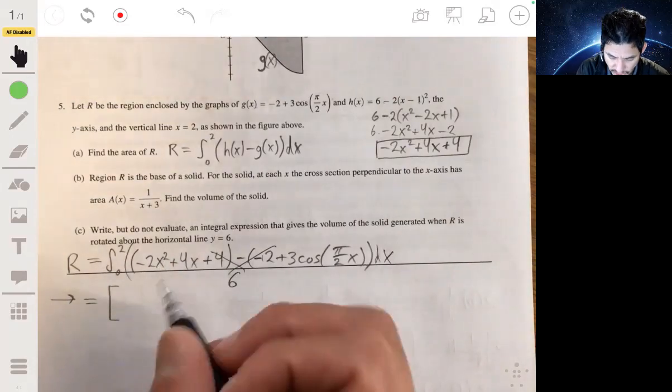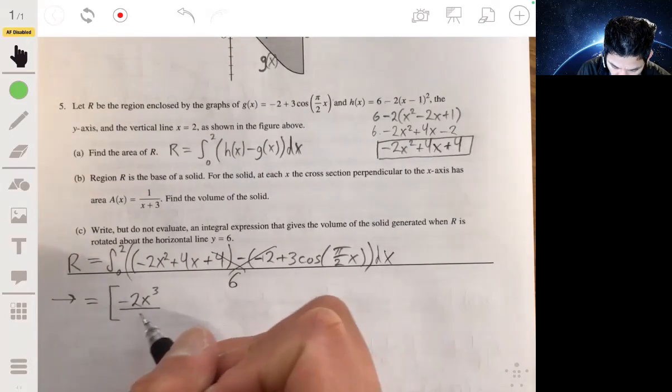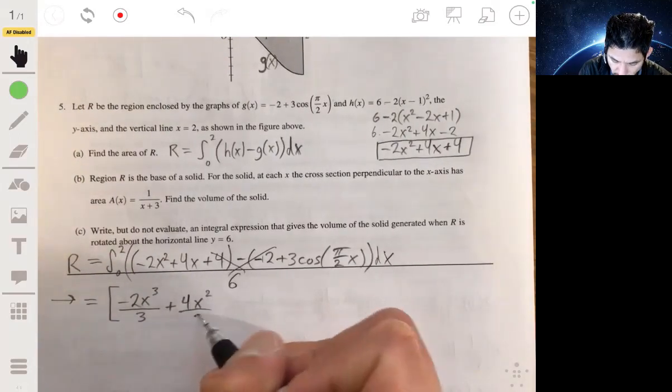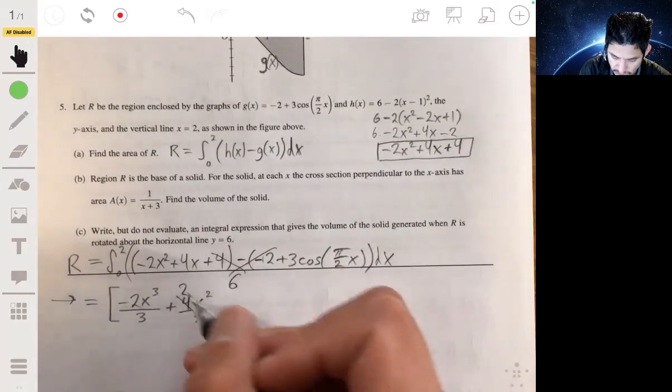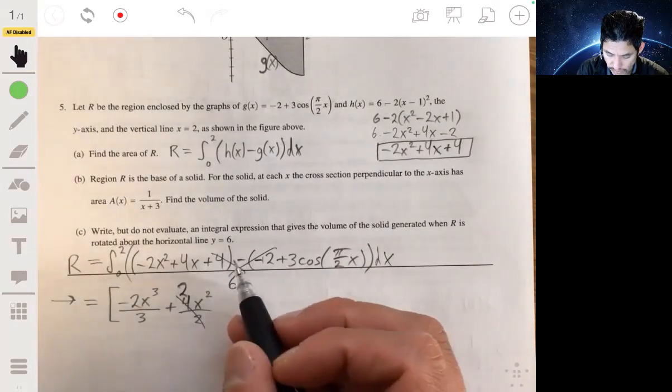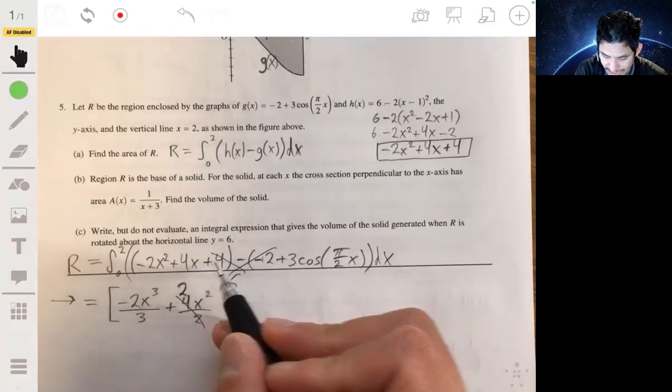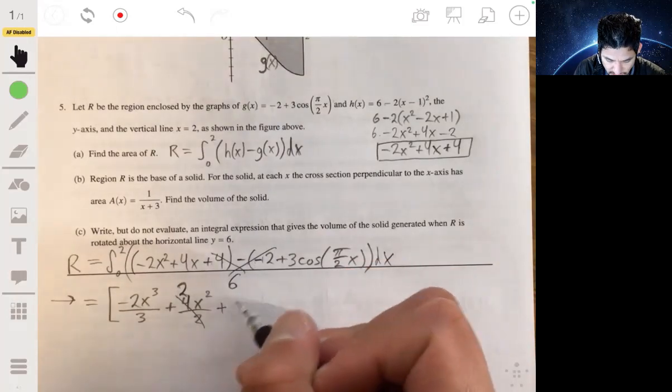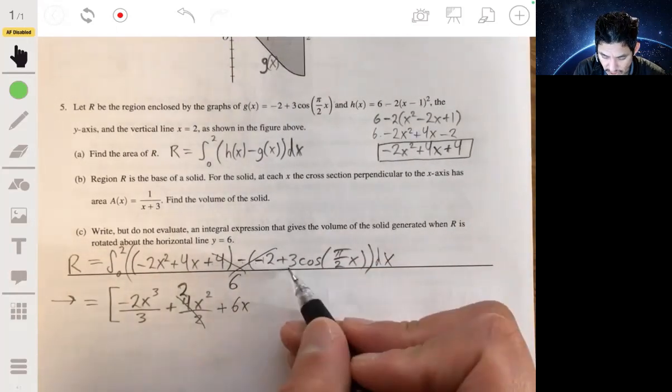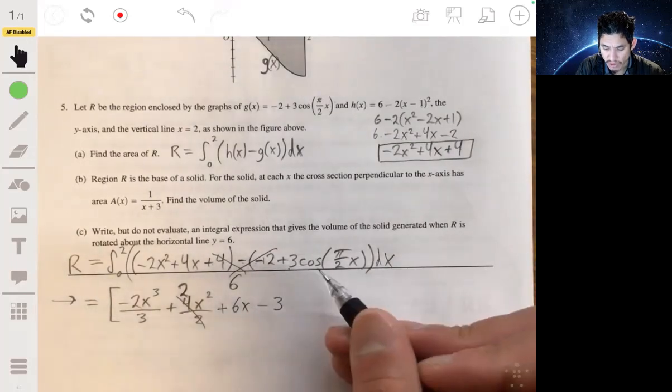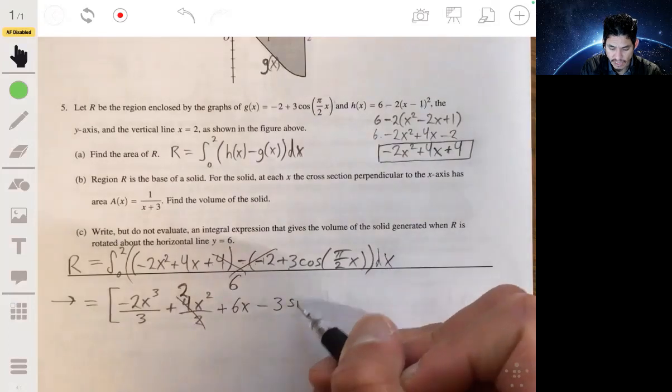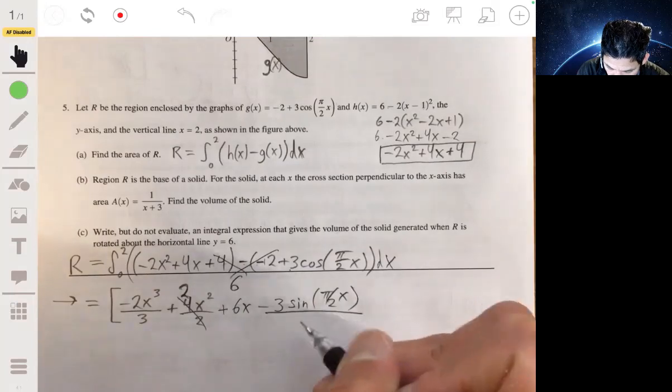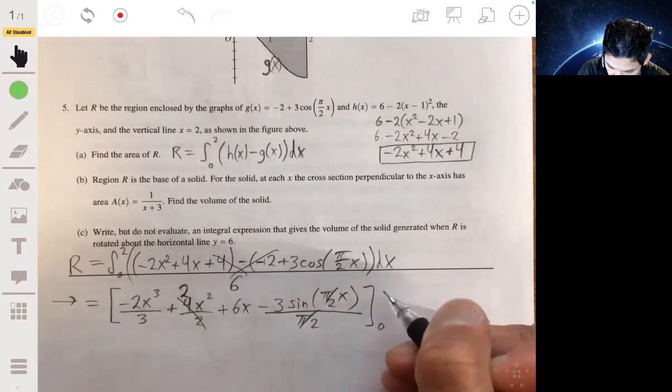So that just becomes a 6. You don't want to write the whole thing over, just make sure that's a 6. And the rest we can start integrating by taking the antiderivatives. Antiderivative of -2x² will be -2x³/3 plus 4x²/2, this will be 2x², plus 6x minus 3 cosine, antiderivative cosine is sine of π/2 times x, all over π/2, endpoints from 0 to 2.